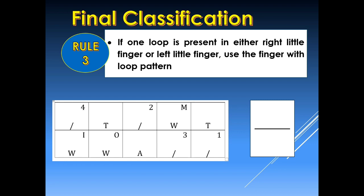If one loop is present in either the right little finger or the left little finger, the priority must be the finger with a loop pattern. So in final classification, we are going to use the finger with the loop pattern — that is rule number 3. Remember, under rule number 1, if taken from the right little finger it goes on the numerator, but if from the left little finger it goes on the denominator. For example, if there is no loop on the right little finger but there is a loop on the left little finger, our final classification will be placed on the denominator.